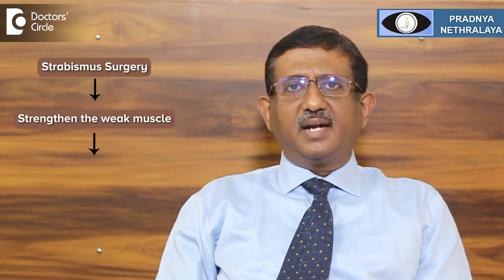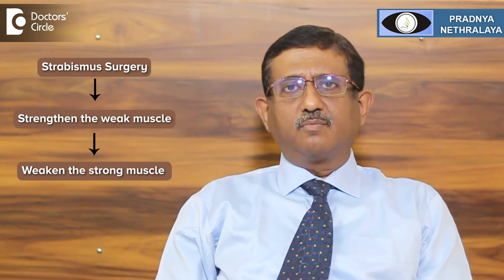So what is the surgery done for strabismus? In a strabismus surgery, we basically strengthen the weak muscle and weaken the strong muscle.